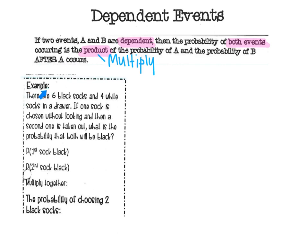This example says there are six black socks and four white socks in a drawer. If one sock is chosen without looking, and then a second one is taken out, what is the probability that both will be black? So I need both socks to be black. I have six black socks and four white socks. No matter what, you always need to know the total — six and four makes ten.